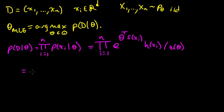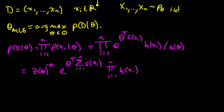And this becomes e to the sum. Let's put it this way: z to the minus n, right, z to the minus 1, n times. E to the sum, so product of exponentials becomes the exponential of the sum. And we can pull out this theta transpose times the sum as i goes from 1 to n of s of xi, times this product over h's, h of xi's.